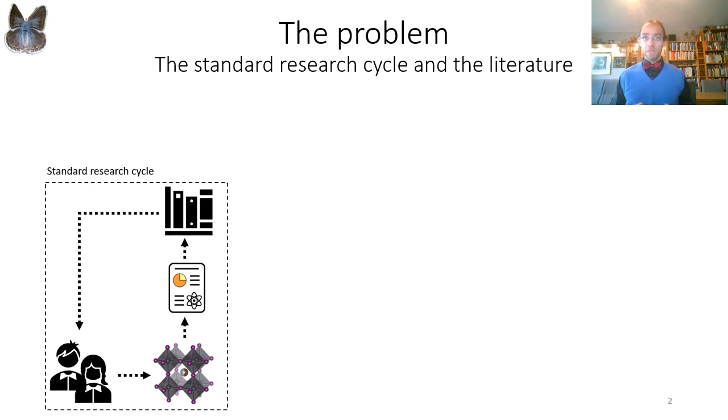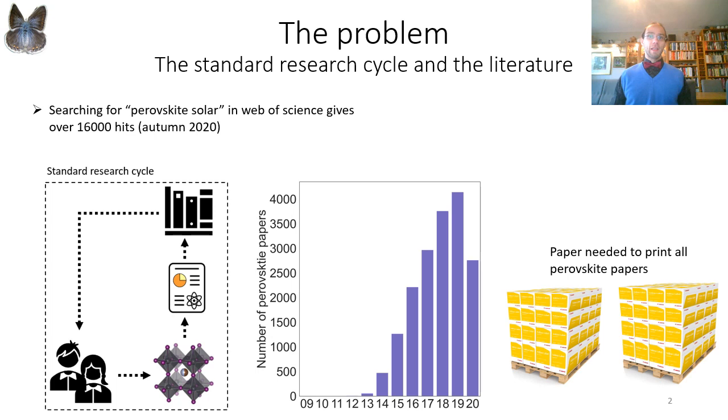This obviously works reasonably well given how science and technology have progressed in the last few centuries, but it's not a model without flaws. One of those is how to keep up with expanding literature and how to keep track of what has already been done and maybe what should be done but has not yet been done. In the field of perovskite this is a very real problem. If you search for perovskite solar in Web of Science you get more than 16,000 hits. It's incredibly hard to keep up, and if you're new to the field it's essentially impossible to catch up. This will have consequences for how efficiently we can do perovskite research.